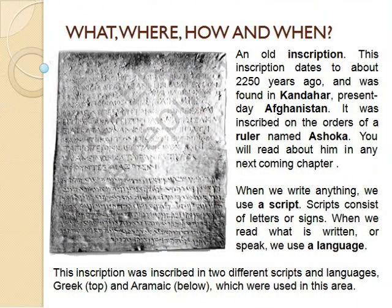Now another picture is here — an old inscription. This inscription dates to about 2250 years ago and was found in Kandhar, present-day Afghanistan. It was inscribed on the orders of a ruler named Ashoka. We will read about this king in some later chapters. When we write anything, we use a script — scripts consist of letters or signs. When we read or speak, we use a language. This inscription was inscribed in two different scripts and languages: Greek on the top and Aramaic on the bottom, which were used in these areas.